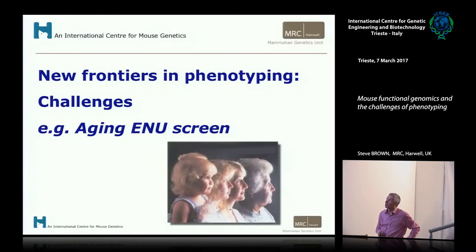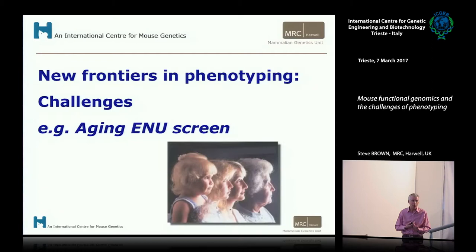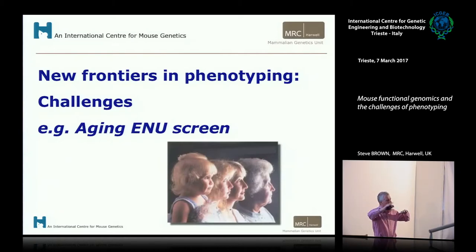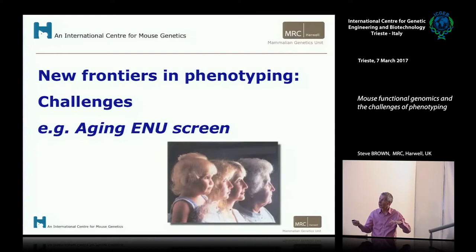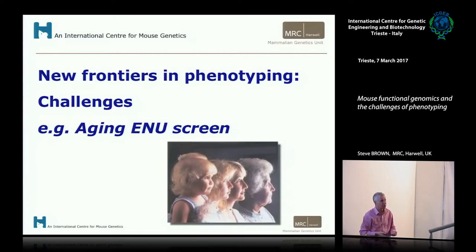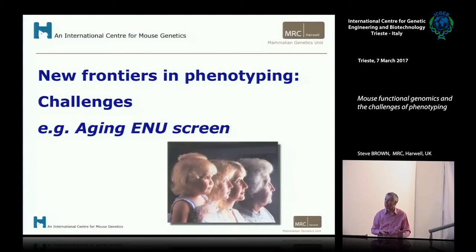In the last part of my talk, I want to move to new frontiers in phenotyping — in particular, the use of challenges. Remember that three-dimensional matrix: along one axis was environment. Environment, or challenge, is what we can put upon our mouse mutants and ask: if we age a mouse, can we see phenotypes we don't see if we just look at the mouse in its juvenile state? If we change the diet, or put mice on a high-fat diet, it will reveal phenotypes you won't see on a low-fat diet. If we expose mice to environmental stressors like noise, will we see more deafness phenotype?